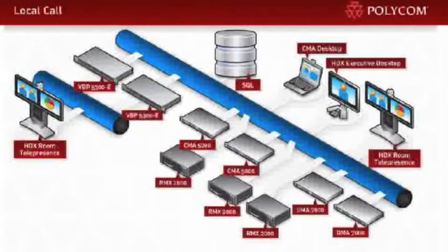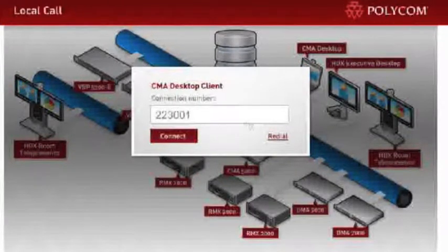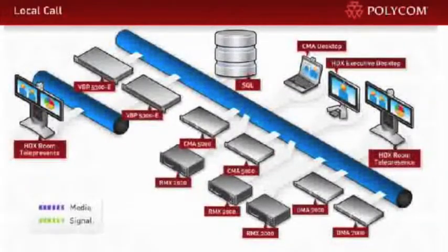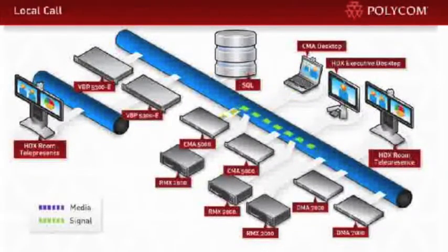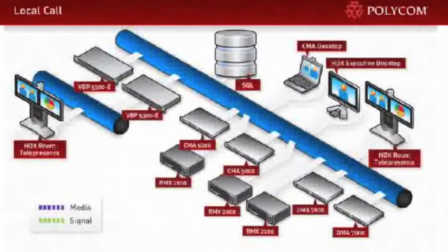Let's start with the typical video call within an enterprise. From my CMA Desktop client, I'll dial a virtual meeting room. The call gets routed from the CMA to the DMA, which uses load balancing and other algorithms to send it to the optimal RMX on my network. Once in, I meet other colleagues who've dialed in, and we have a productive, high-quality meeting.